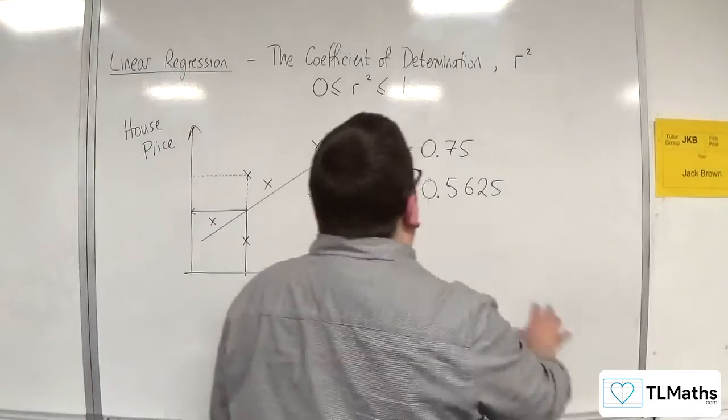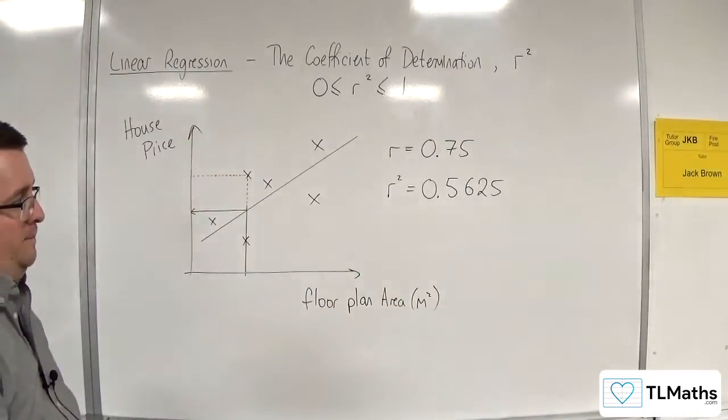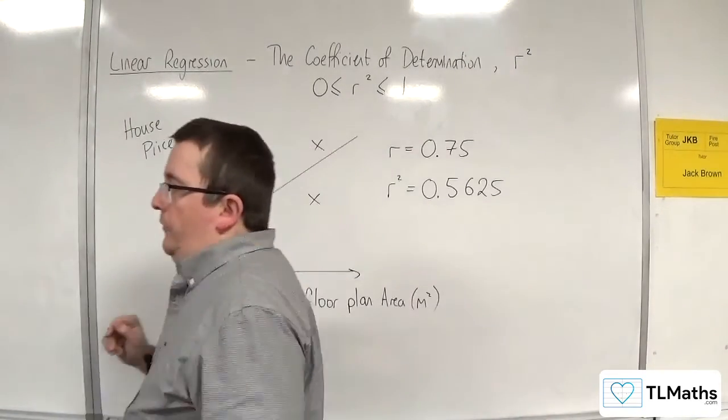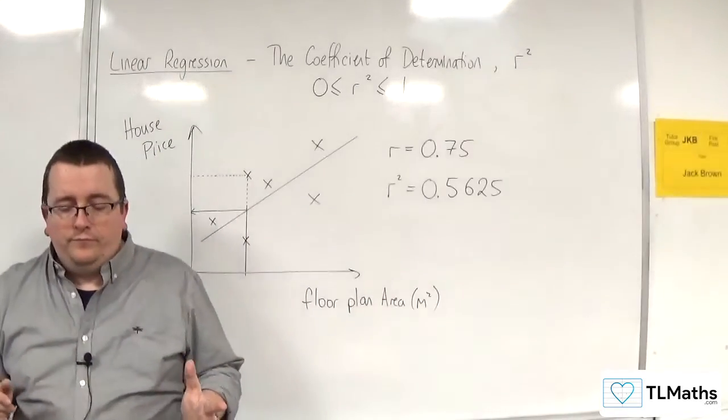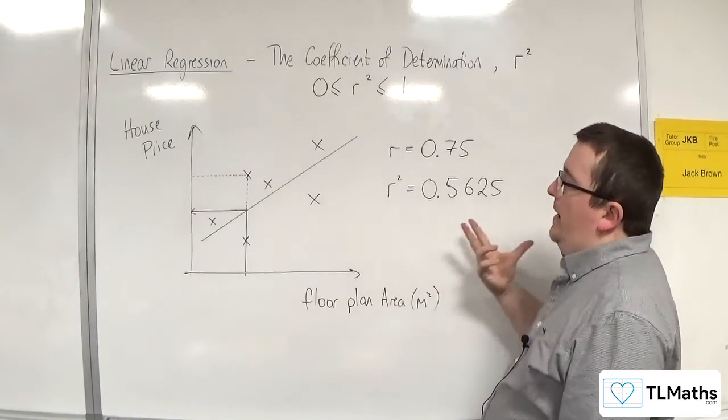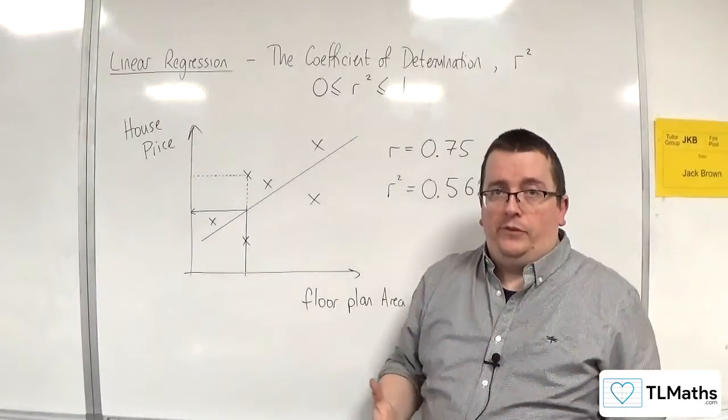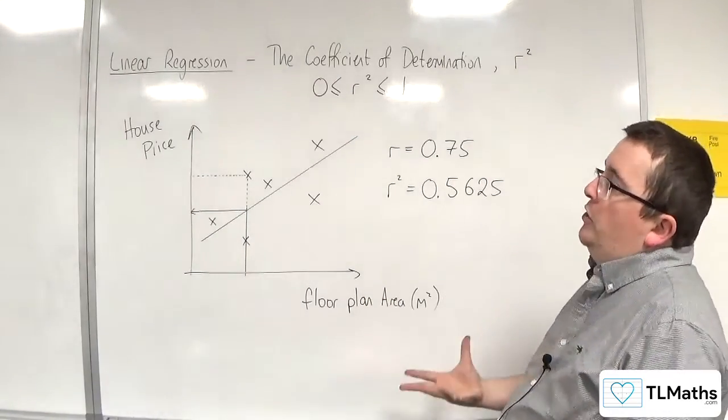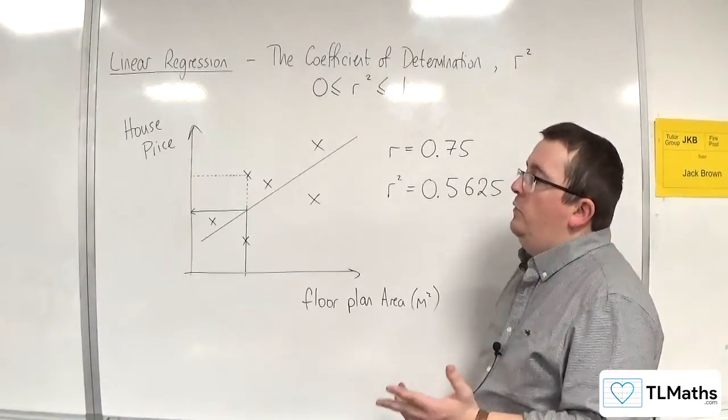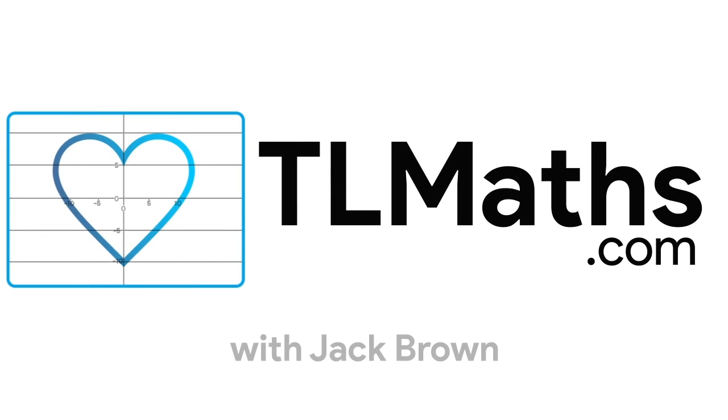So this is what the coefficient of determination is there to do. Obviously, the higher the coefficient of determination, the better. But that is how you interpret it. It's the proportion of the variation in Y that is explained by the variation in X. It's quite a difficult concept to get your head around at first. These types of questions are only going to be relatively small, I would hope. But that is how you use it and work with it. Thank you.